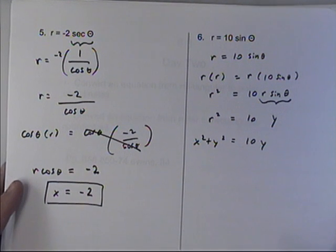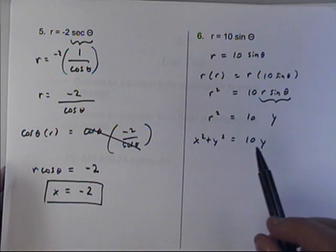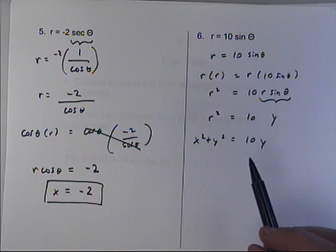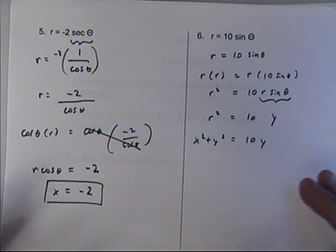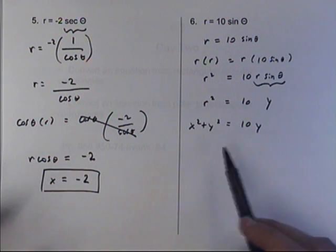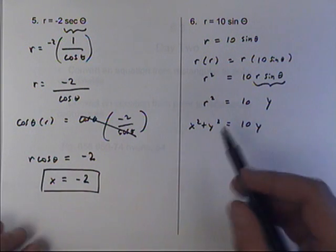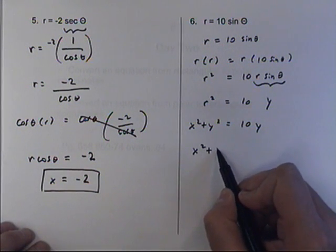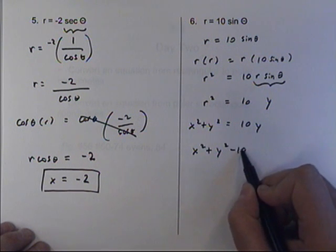Then, generally what we do is we don't leave it this way. We try to write it in terms of a circle. And that seems a little unnecessary. All we would have to do is minus the 10y on both sides. But that's really how you begin writing something as a circle.